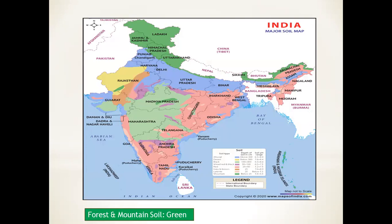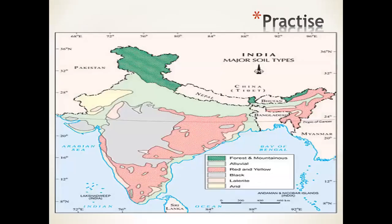For forest and mountain soil, you can blindly write Jammu and Kashmir, Himachal Pradesh, Arunachal Pradesh, and Sikkim as the most important places. This is a practice map where you can identify all the above soils — the green color is completely forest and mountain soil. Identify all the states in the map for your practice — it will definitely be beneficial for your UPSC exams. Thank you very much.